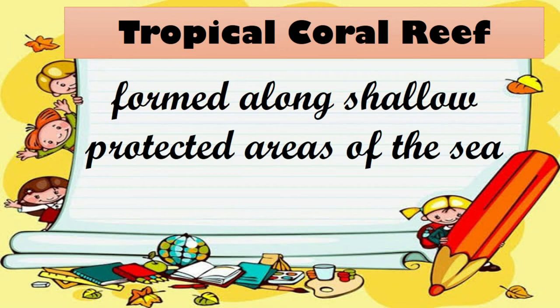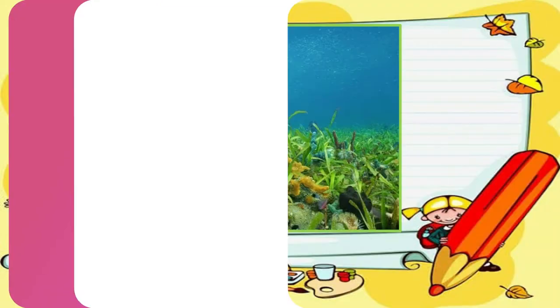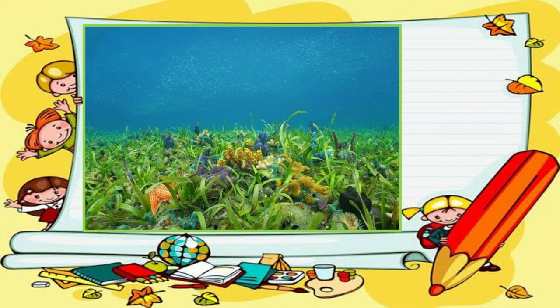Tropical coral reef forms along shallow protected areas of the sea. Corals are the dominant reef organisms. Their hard skeleton provides shelter for small fish and many invertebrates. Algae and seagrasses also grow in the reef. Sunlight easily passes through the clear shallow water; hence, photosynthesis by these producers occurs at a high rate.